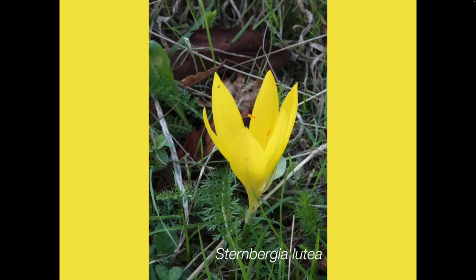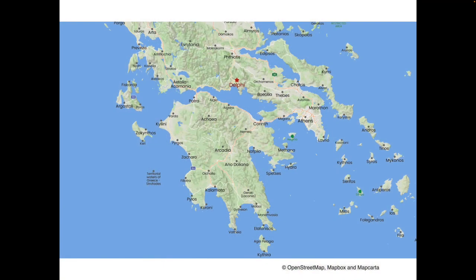There are two things to learn from this. Firstly, there is a feast of flowers to see in the Mediterranean in the autumn, and secondly this provides an abundance of ideas of plants to search out from nurseries to provide autumn colour in the garden. Let's take a quick look at one place where these autumn beauties can be found — there are many more.